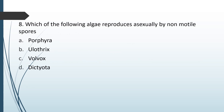Which of the following algae reproduces asexually by non-motile spores? Options: Porphyra, Ulothrix, Volvox, Dictyota. The correct answer is option A — Porphyra.